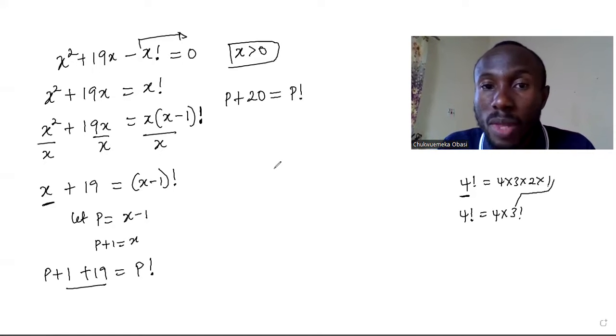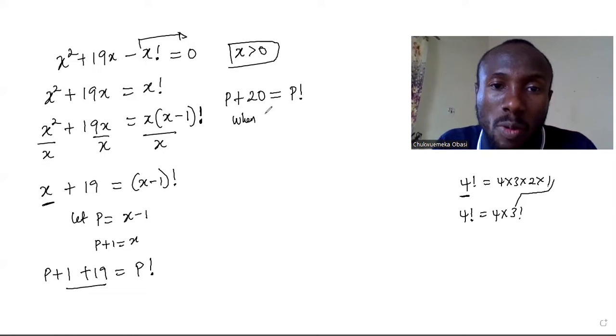At this point now we begin to try numbers. We need to do trial and error. So let's p be 1. When p is equal to 1, you have 1 plus 21, that will give us 21 is equal to 1 factorial, and that's not true. So that's wrong.